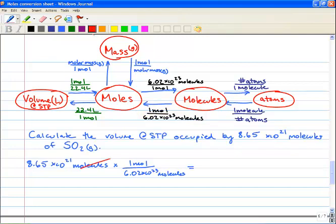So we get rid of those molecules and we're left with moles and we get 8.65 times 10 to the 21 divided by 6.02 times 10 to the 23 and we get 0.01436 moles.